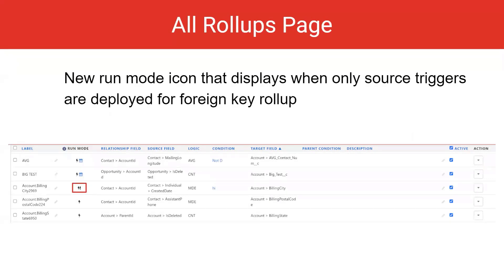For this last item on the all rollups page, we've added a new run mode icon that displays when only source triggers are deployed for foreign key rollups. You can see this new icon has both a lightning bolt and exclamation point.